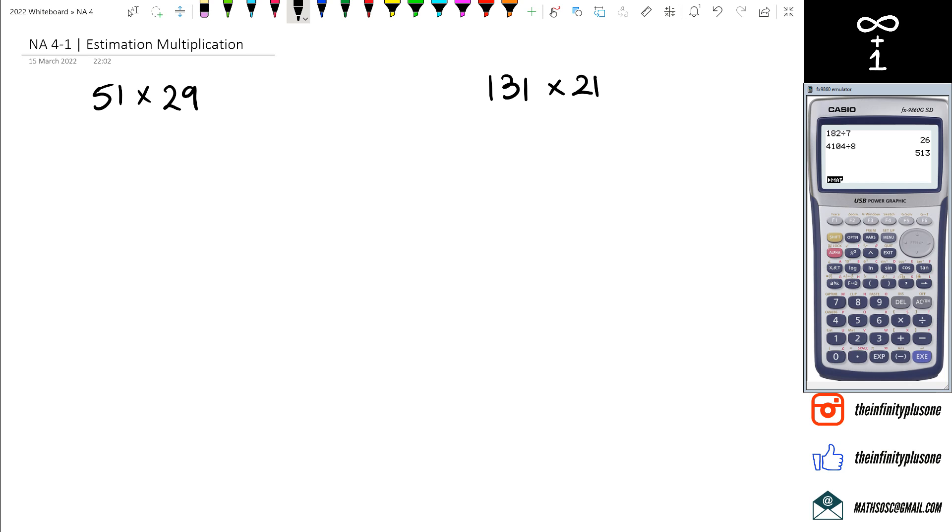So 51 times 29. Let's have a look at it on the calculator. We've got 51 times 29, which is 1479. That is what this answer is.